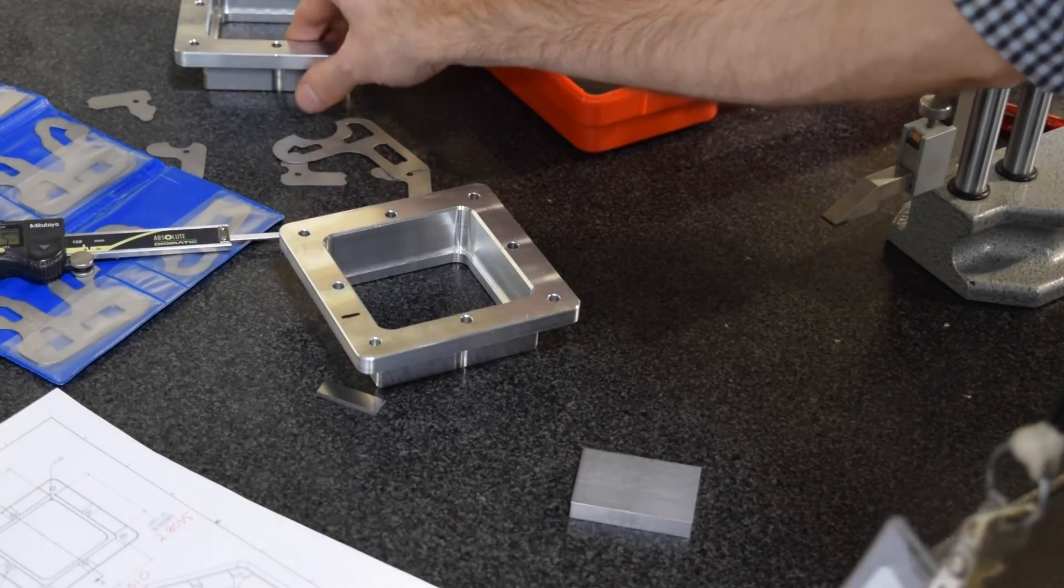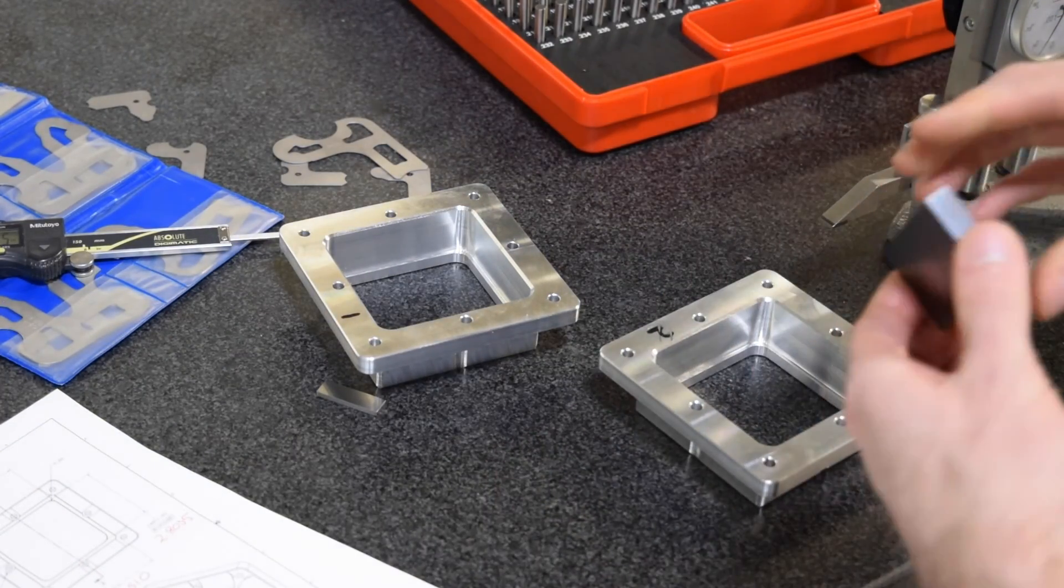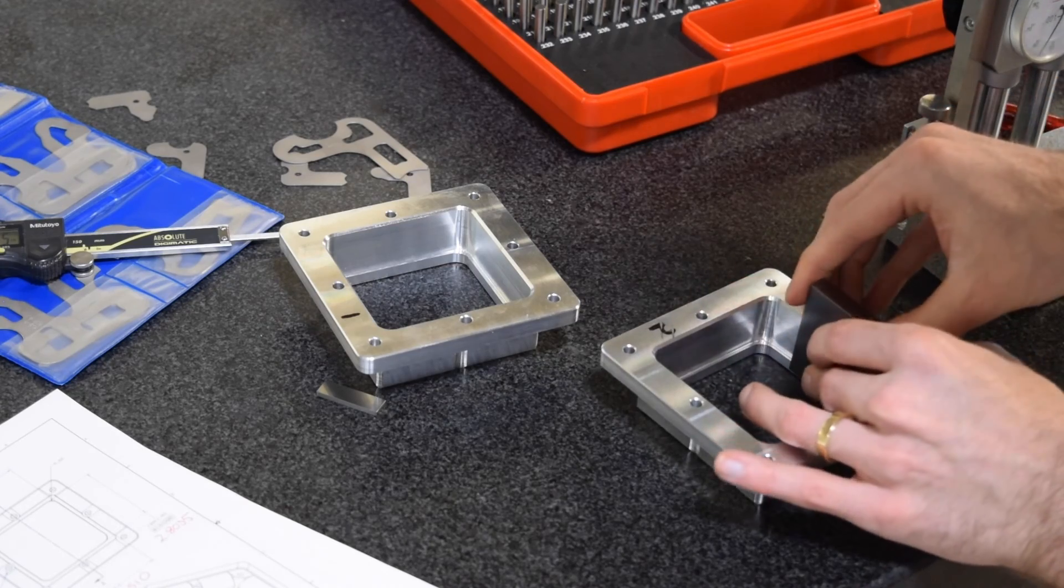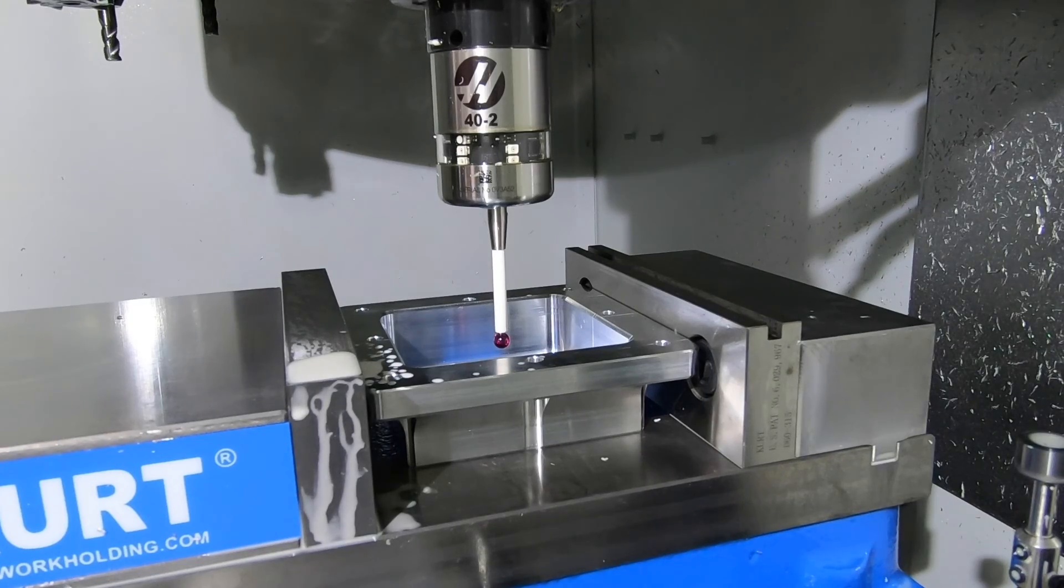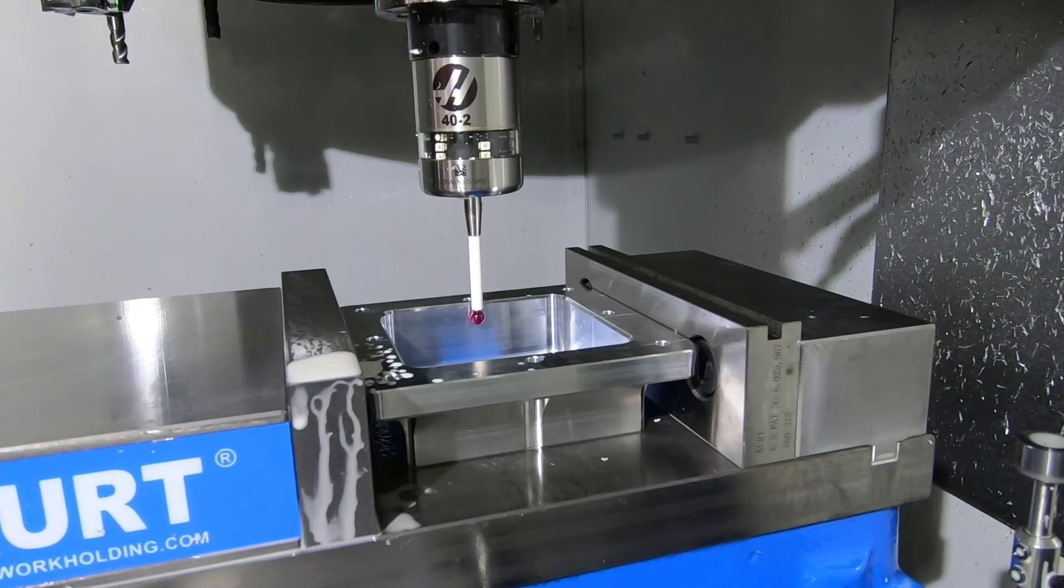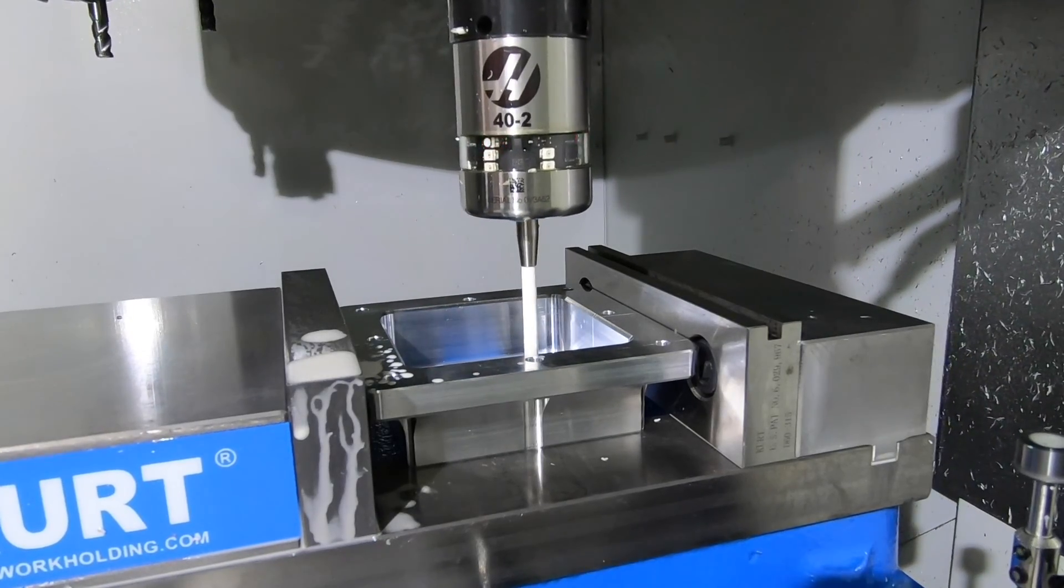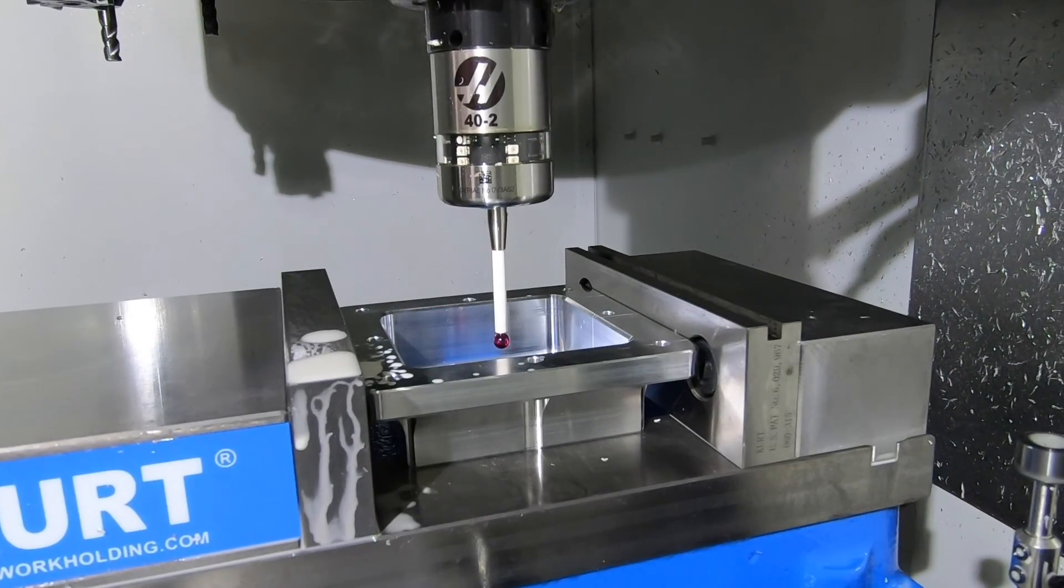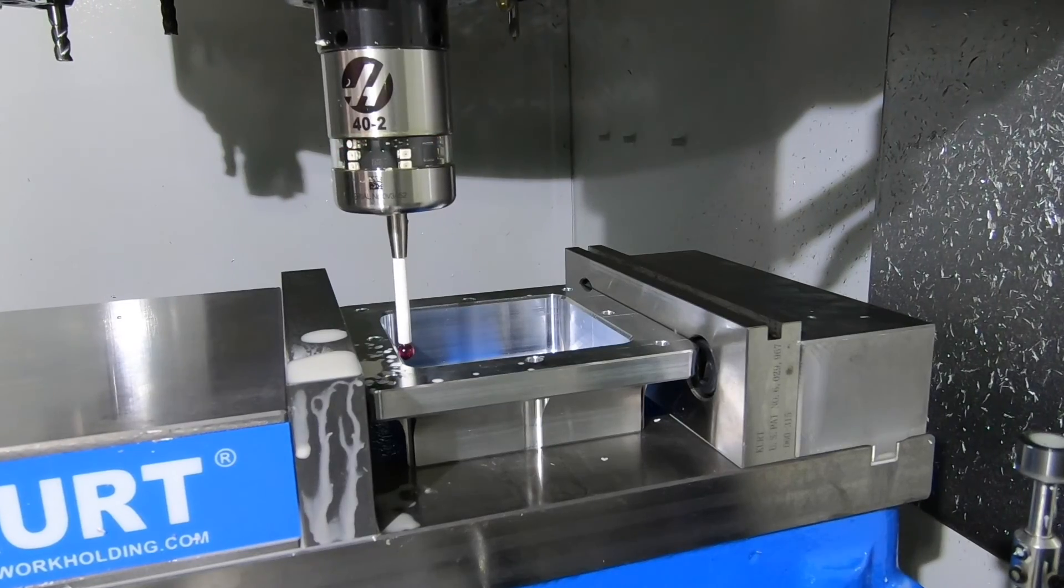A good rule of thumb is to choose an instrument that has a total uncertainty three to four times smaller than the tolerance you're trying to inspect. I wouldn't hesitate to rely on the probe to accurately inspect features down to about plus or minus one thou, and it probably would be fine for features of plus or minus five tenths, but I think that's about the limit of its accuracy.